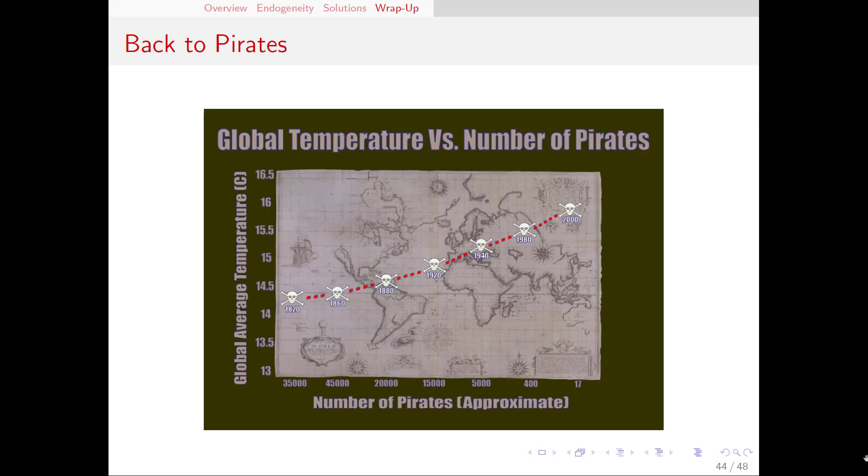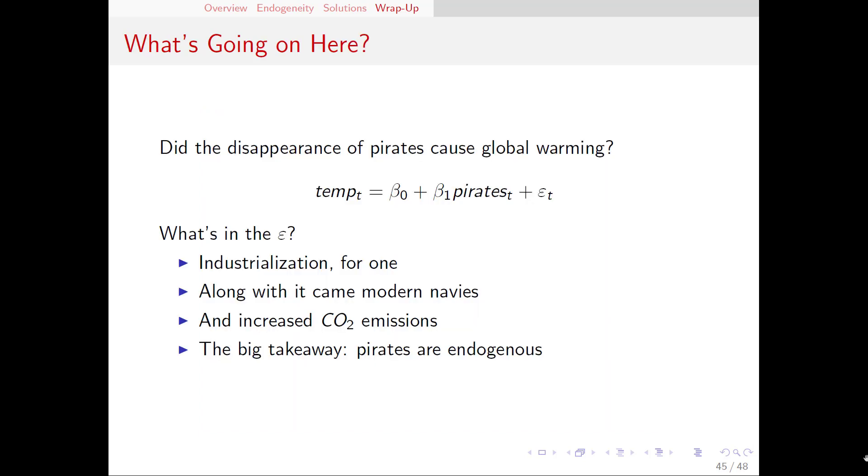Let's return to our motivating example from the first video in this series. There we looked at the relationship between the number of pirates in the world and the average global temperature. And we saw that there's a correlation here. The fewer pirates there are, the higher the temperature. Now we have the tools to think about why we might see this relationship. We can write out a regression equation. Temperature equals beta naught plus beta 1 times pirates plus epsilon. We can now think about what's in the epsilon.